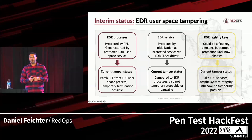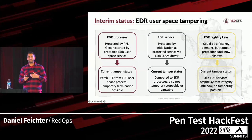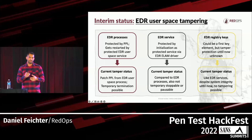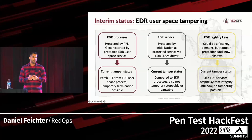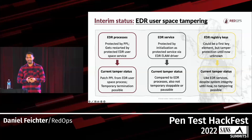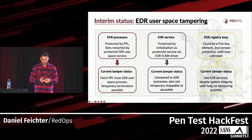So what's the interim status? We learned about the relationship of the EDR userspace components: processes, services, and registry keys. Normally, processes are initialized as PPL — we can temporarily kill them, but they always get restarted by the connected EDR service. There is currently no way to directly terminate the EDR service because it's initialized as a protected service. But maybe the registry key responsible for initialization of the service could be a key element — only problem being tamper protection currently blocking changes to the Start entry.